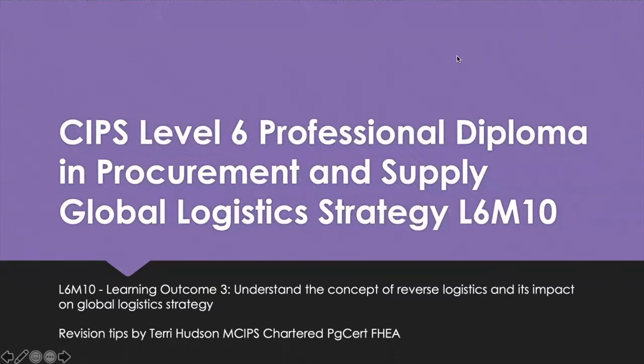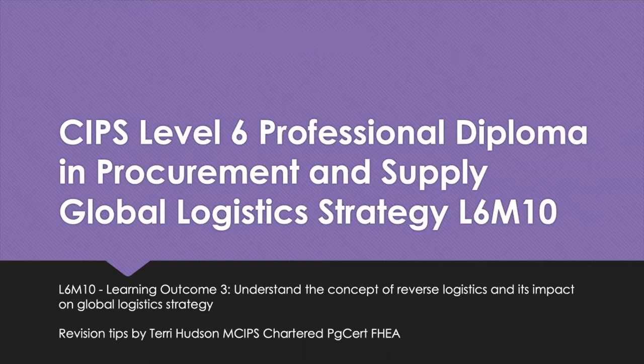Hello and welcome to revision tips for CIPS Level 6, Professional Diploma in Procurement and Supply. This is module 10, Global Logistics Strategy, and it's learning outcome 3, which is to understand the concept of reverse logistics and its impact on global logistics strategy. We're going to look at the concept and requirements of reverse logistics, along with the strategic factors that influence reverse logistics.